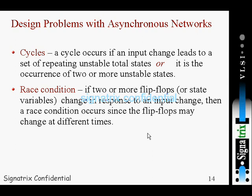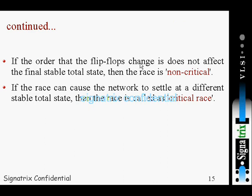If the order in which the flip-flops change does not affect the final stable state, then the race is non-critical. For example, if the first flip-flop samples the value and the second samples the propagated value, and the circuit still works correctly, that race condition is overcome by the hardware itself. Even if there is a race condition, if your circuit is still working and stable, then that race condition is not important.